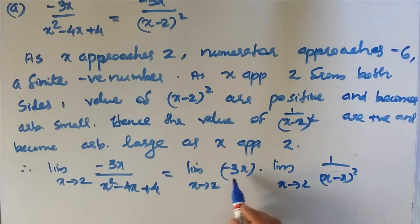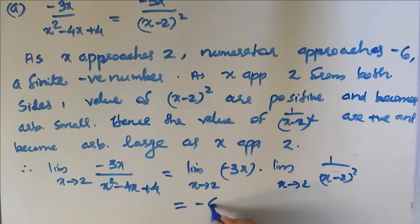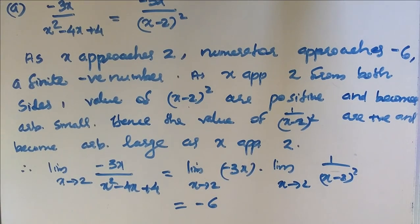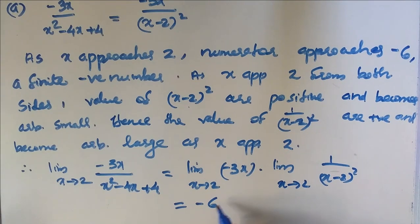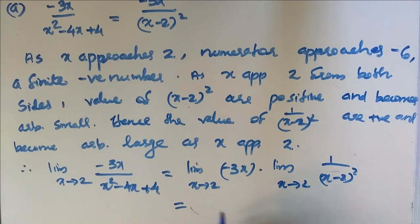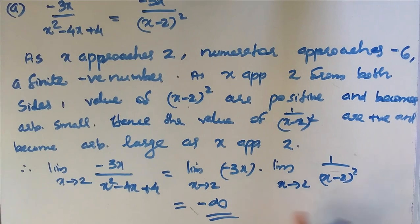So this limit of the numerator is minus 6, and the denominator becomes arbitrarily large positive. If it is arbitrarily large and the numerator is negative, then the result will be minus infinity.